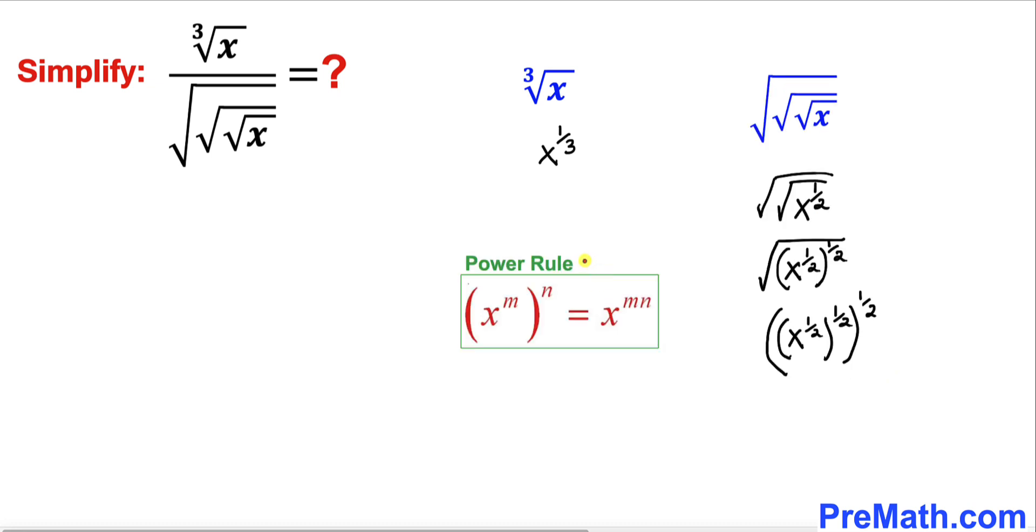Now let's recall this power rule of exponents. According to this rule we can multiply out all these nested exponents, giving us x to the power of 1 divided by 8.